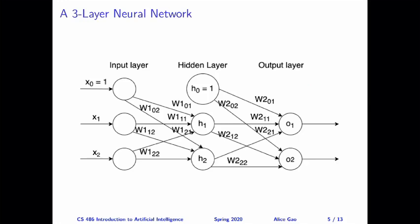So I've labeled all the weights. Our goal is to, given some training data, we want to learn the weights such that our actual output values, O1 and O2, are close to the expected output values given by the training data.